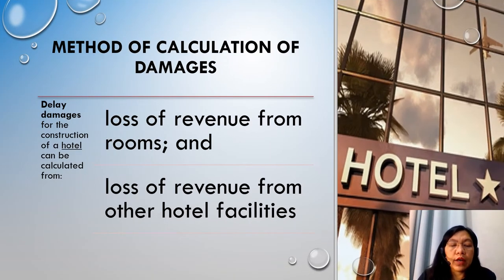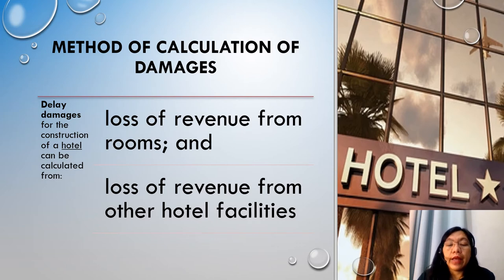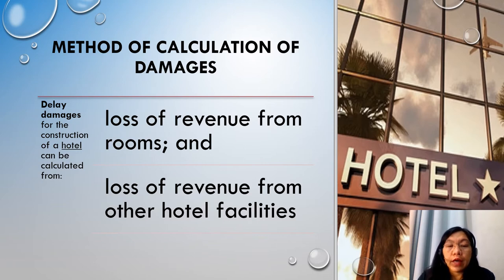Now we will proceed with the method of calculation of damages. Delay damages for the construction of a hotel, for example, can be calculated from the loss of revenue from rooms and from other hotel facilities. The calculation may consider the occupancy levels of a hotel in operation, room charge rates, income from restaurants and leisure facilities such as gyms, swimming pools, meeting rooms, and conference bookings. The calculation must also consider costs that may be saved as a result of the delay, such as utility consumption costs, and cannot be based purely on revenue alone.